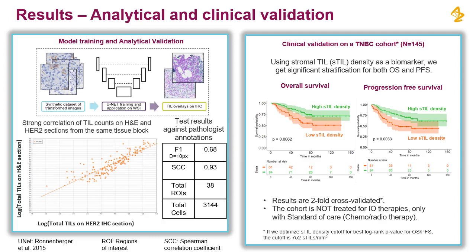This suggests that TIL detection can be robustly performed on IHC sections, opposite to what was done traditionally. We also performed tests against pathologist ground truth on more than 3,000 cell center annotations. We found an F1 score of 0.68 with a distance threshold of 10 pixels between the ground truth and the detection. The Spearman correlation was computed at the region of interest level — 38 regions in this case — and was found to be very high at 0.93, suggesting that detected TIL counts are robust and accurate at the region level.